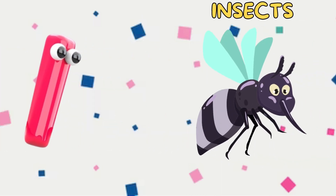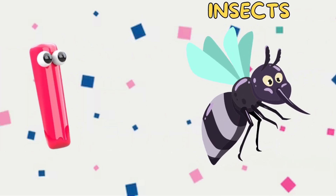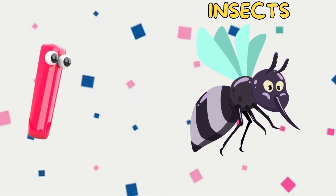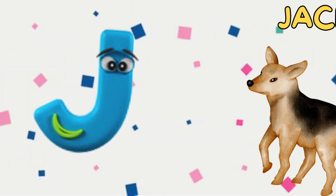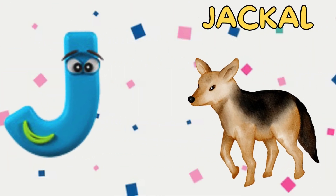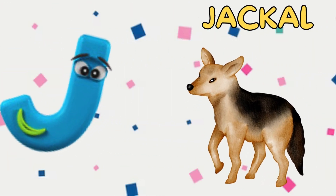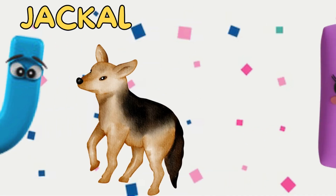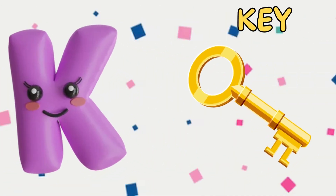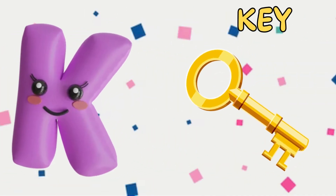I is for insect, i-i-insect. J is for jackal, j-j-jackal. K is for key, k-k-key.